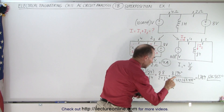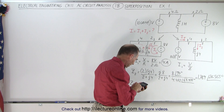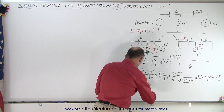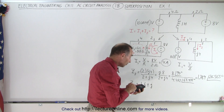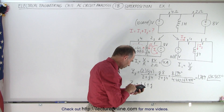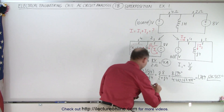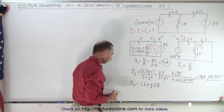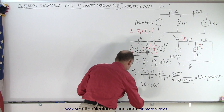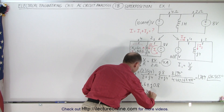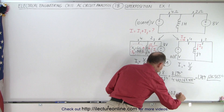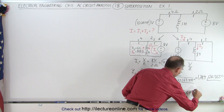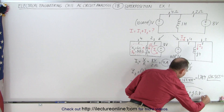Now we convert Z_parallel back to rectangular form to add it to the 4 ohm resistor. Z_parallel equals 1.789 times cosine of 26.565 degrees plus J times sine of 26.565 degrees, which gives us 1.6 plus J0.8. Therefore Z_total equals 4 plus 1.6 plus J0.8, giving us 5.6 plus J0.8. That's the total impedance of the circuit.